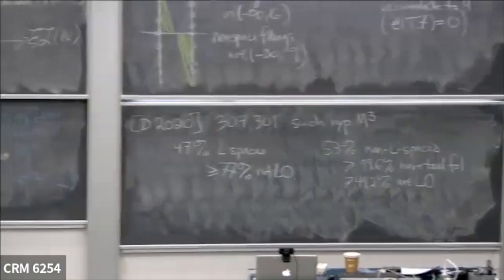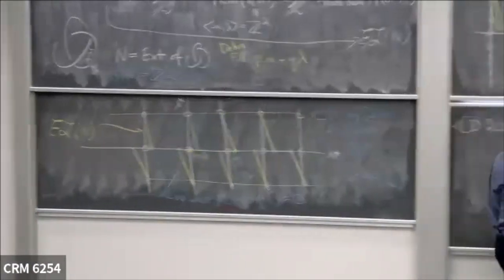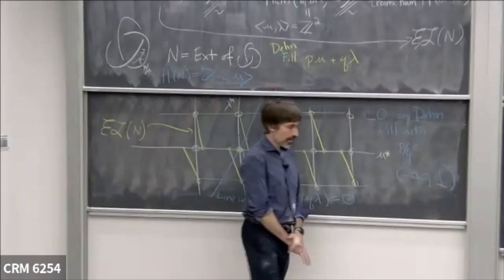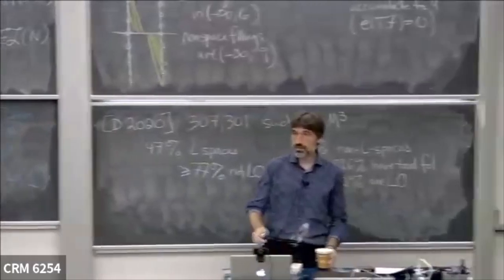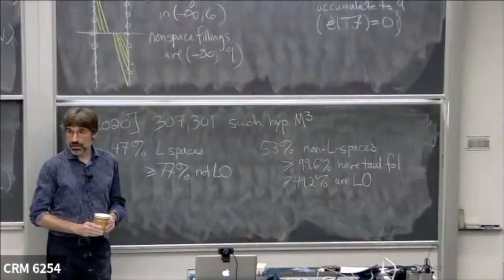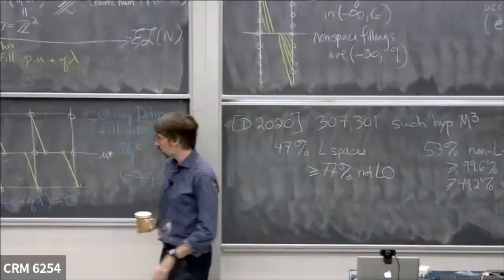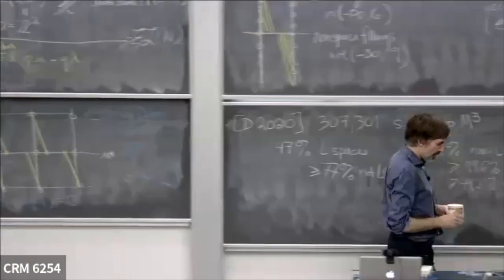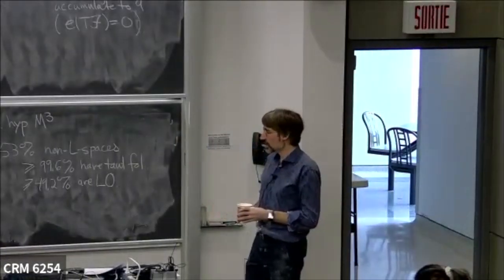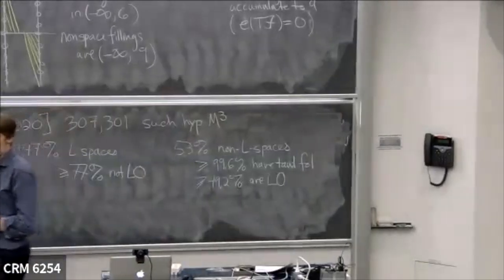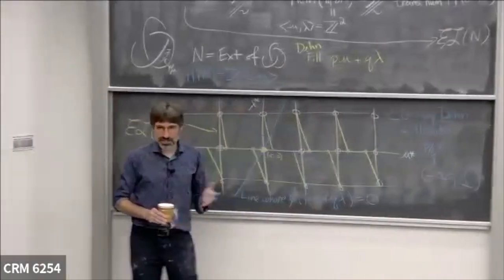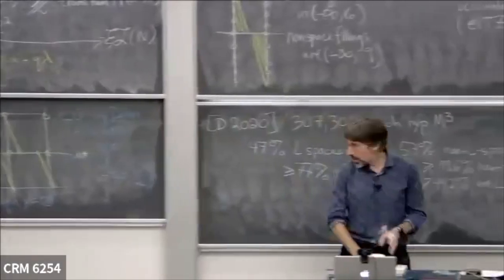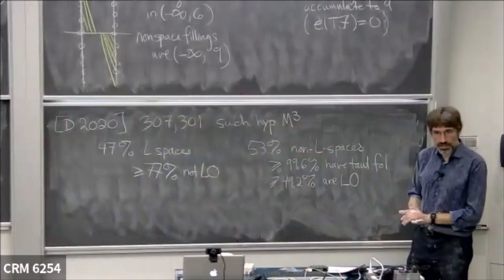Of course the conjecture tells us all non-L-spaces should have taut foliations and everyone should be left-orderable. But this was the best I could do, which means in particular there are many concrete group presentations where we know they should have left orders but we have no techniques to produce them. My hope is that some of you can apply different techniques to actually find additional left orders on these three-manifold groups. That's all I have time to say. Thank you for your attention.